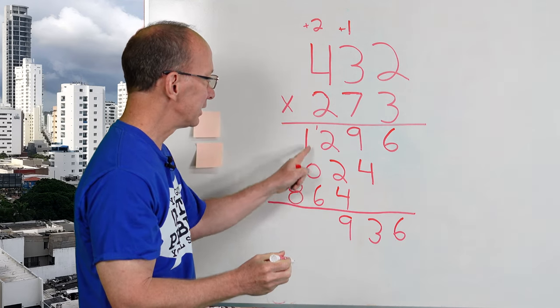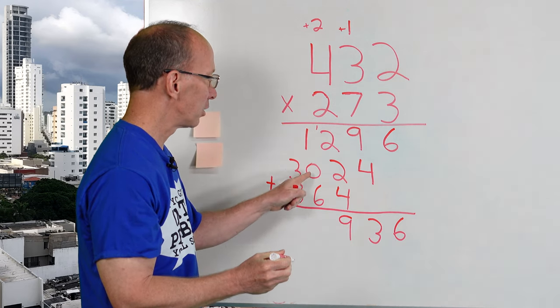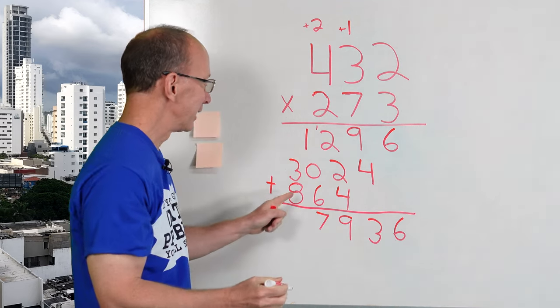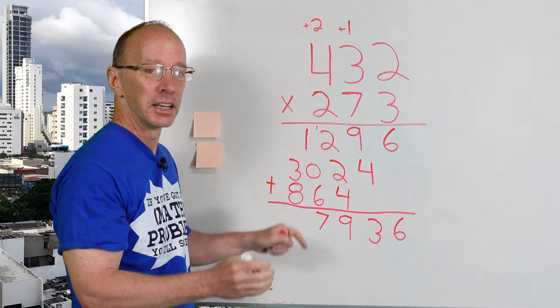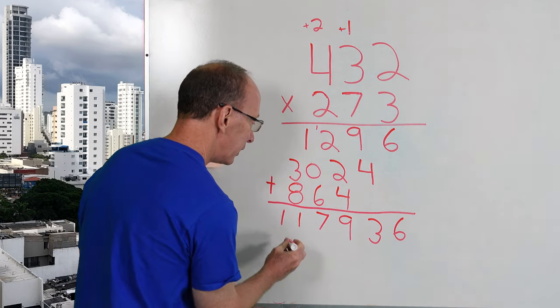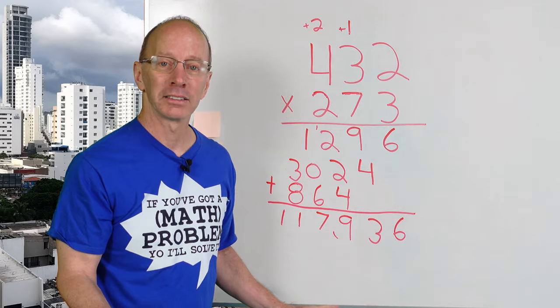Now I'm going to add these numbers here. Six plus zero plus one, seven sent from heaven. Hello, seven. And then I have eight plus three, eight, nine, 10, 11. Put the 11 right there. And there's our answer.